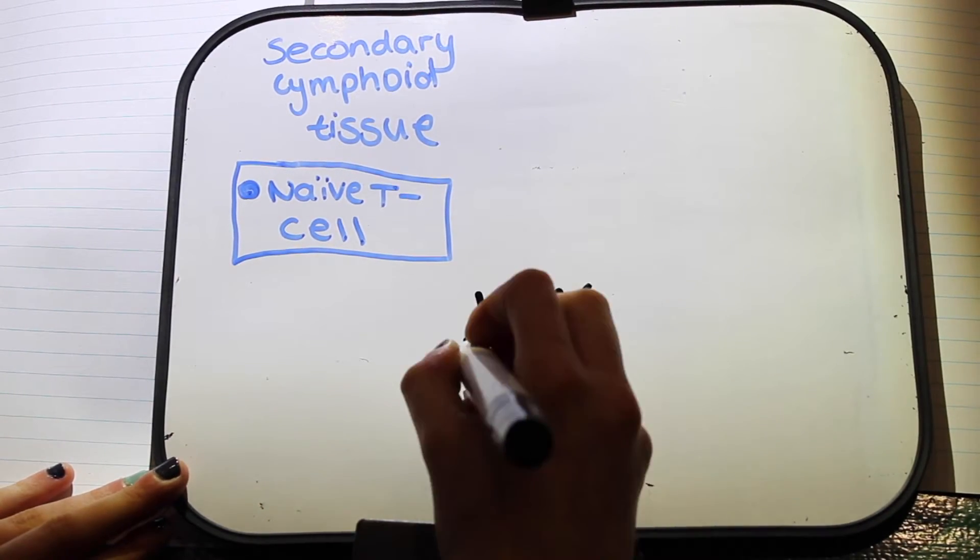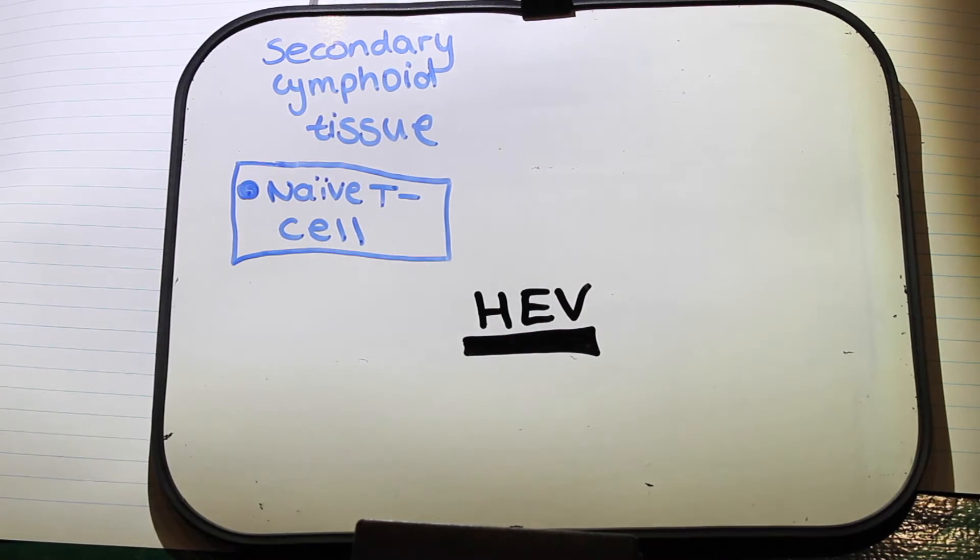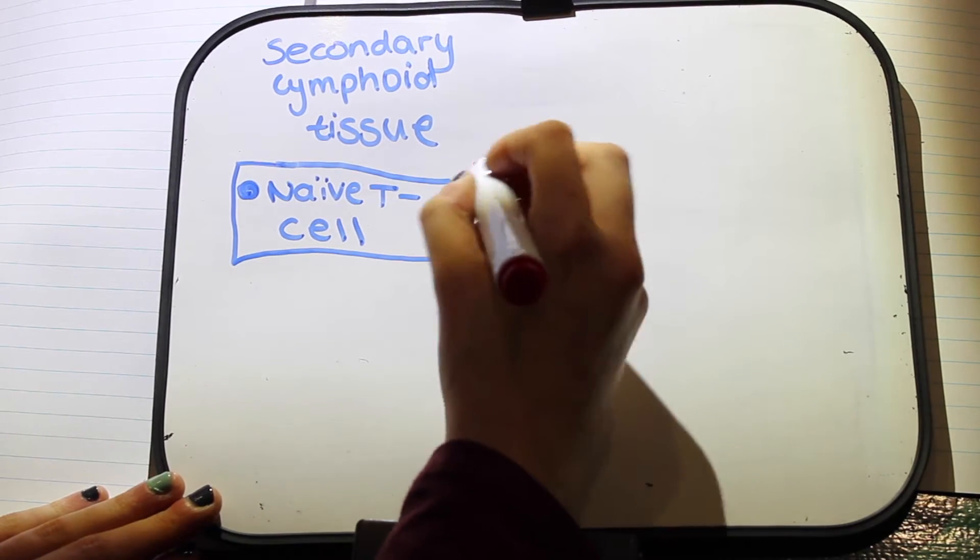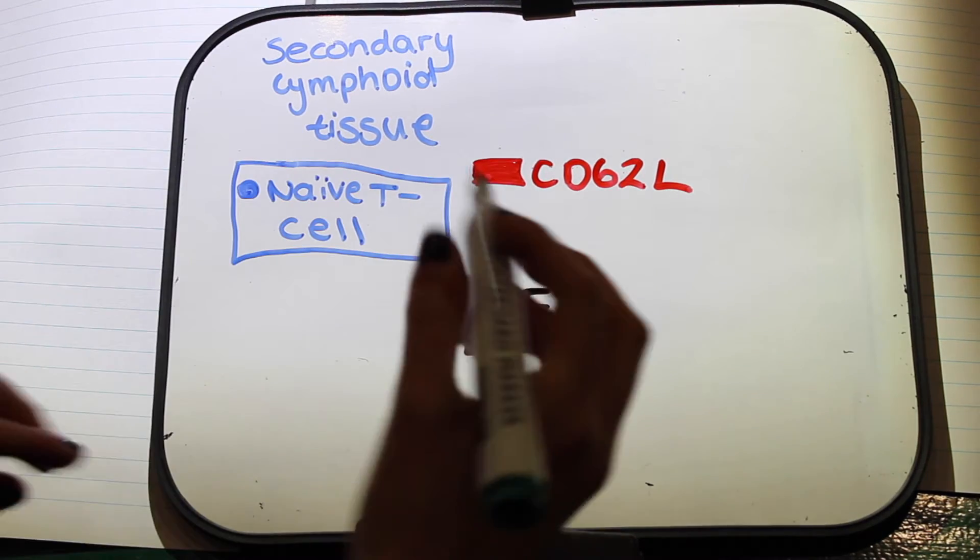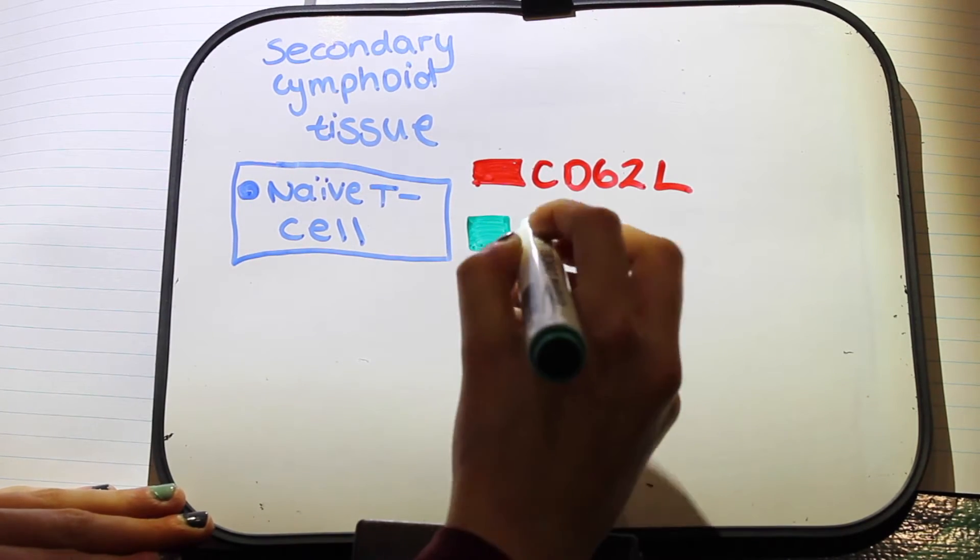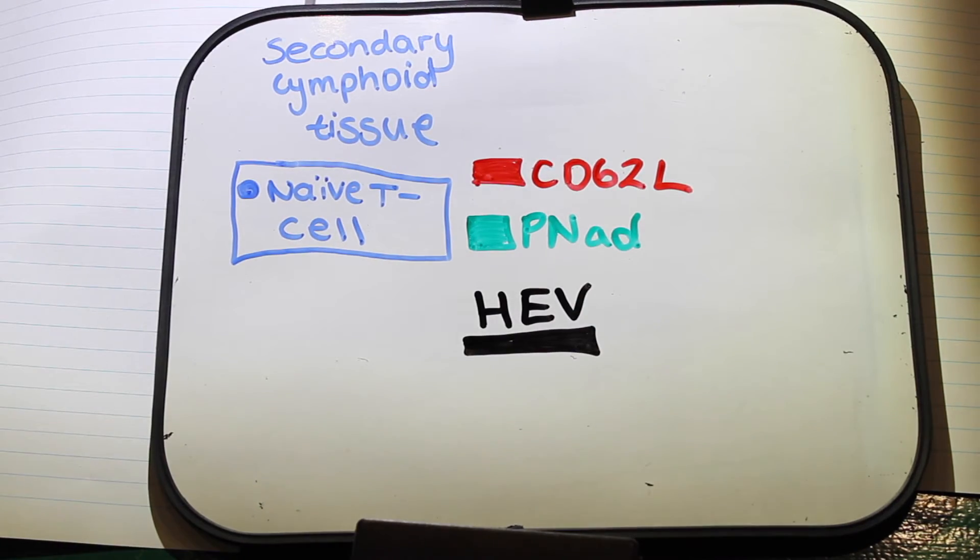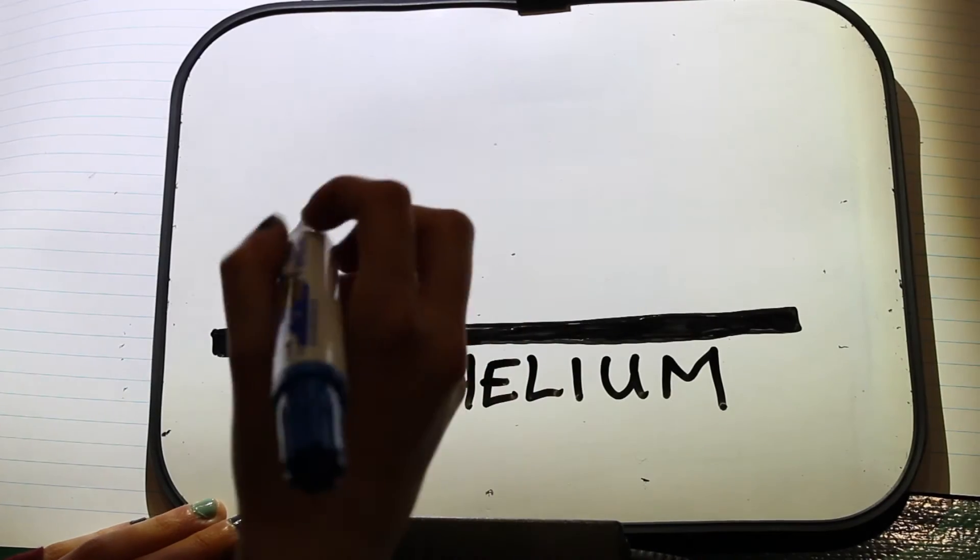Entering the secondary lymphoid tissue, activation occurs when the naive T-cell has entered the secondary lymphoid tissue. Interaction between the CD62L molecule on the T-cell and the peripheral node addressin on the high endothelial venule brings the T-cell to the endothelium.